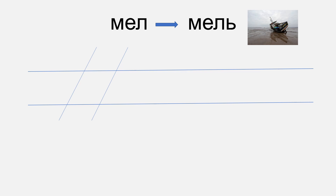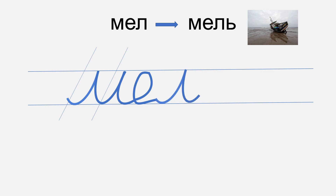How do we write мель? We start with м from lesson two, then а from lesson five — I connect them together with a loop. Now we write л and then we add the soft sign at the end. Мель. Pause the video and practice with this word. It's very important to pronounce it correctly — don't say мел, say мель, with the soft sign at the end.